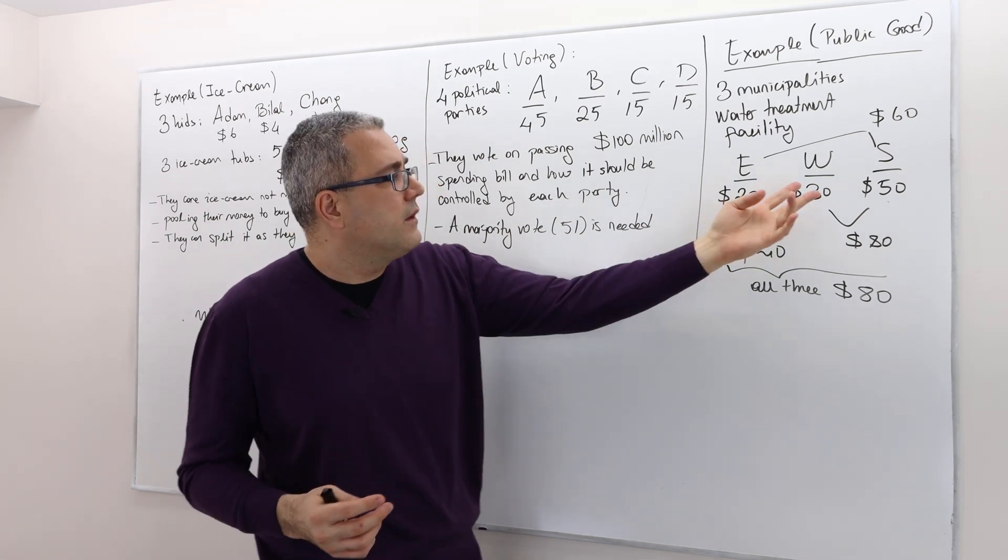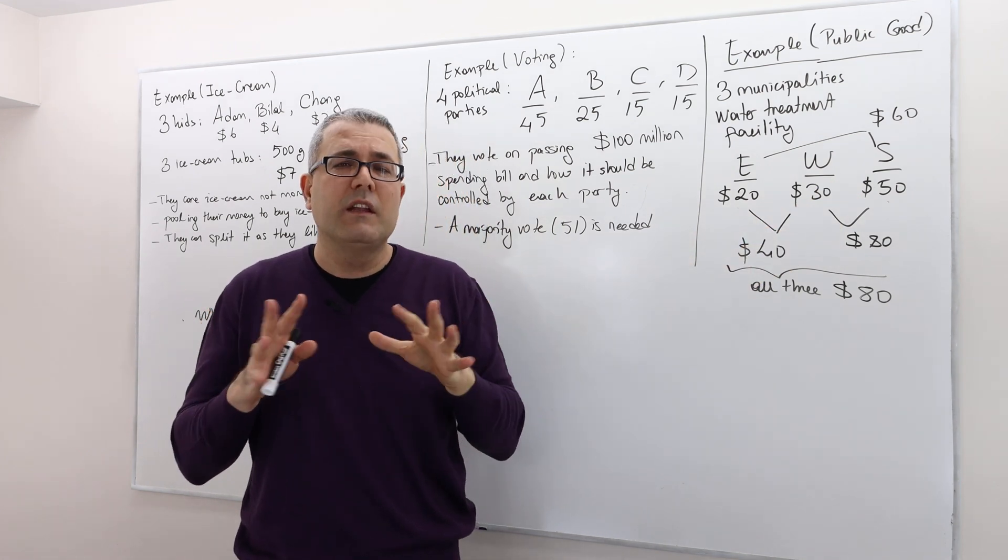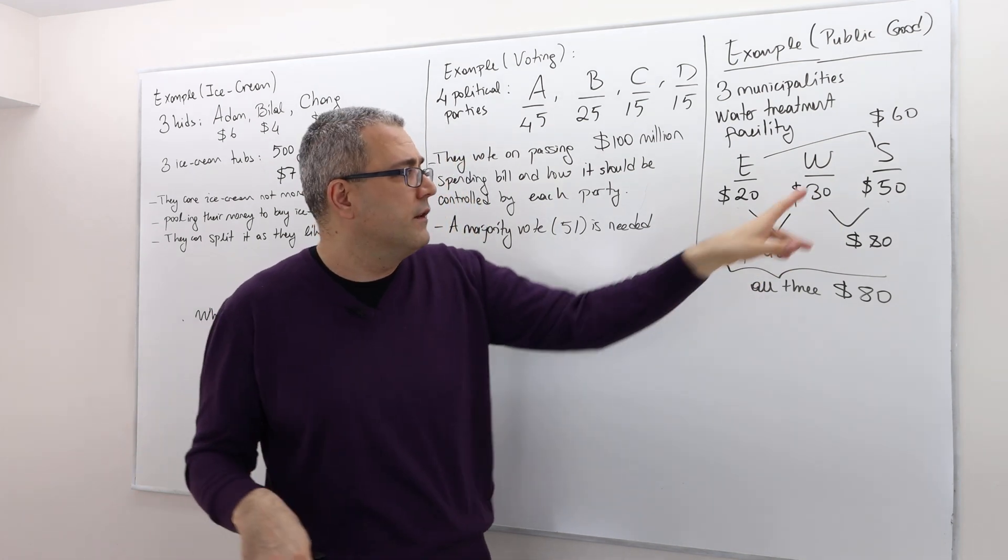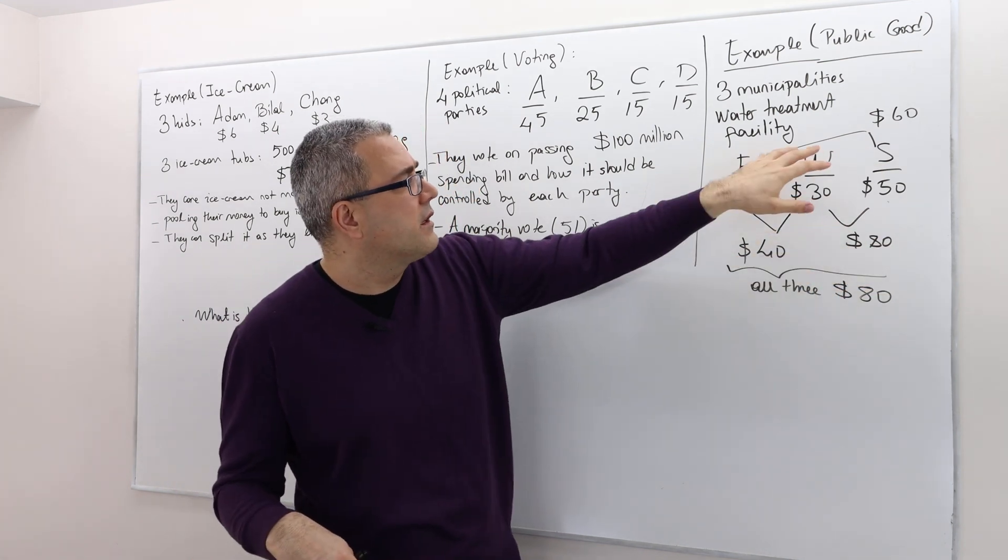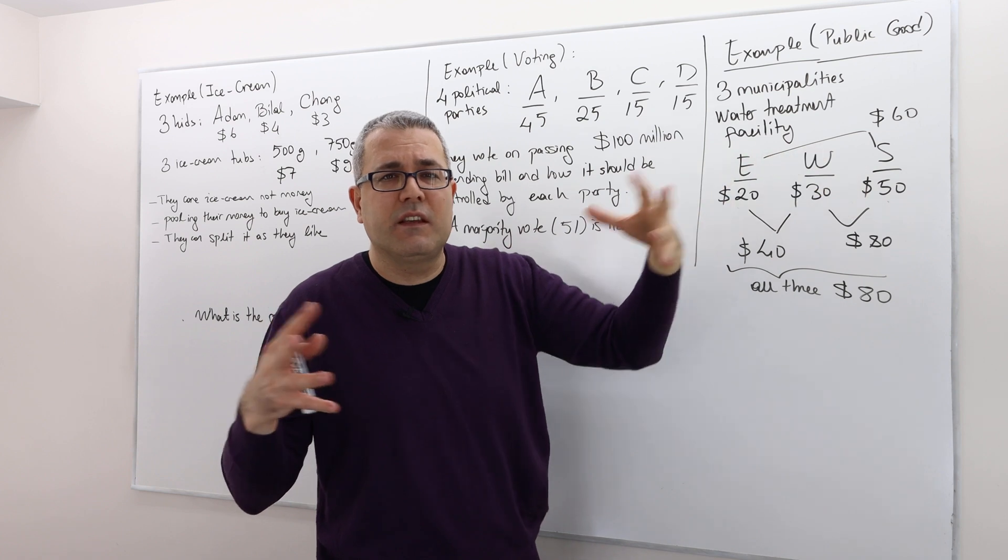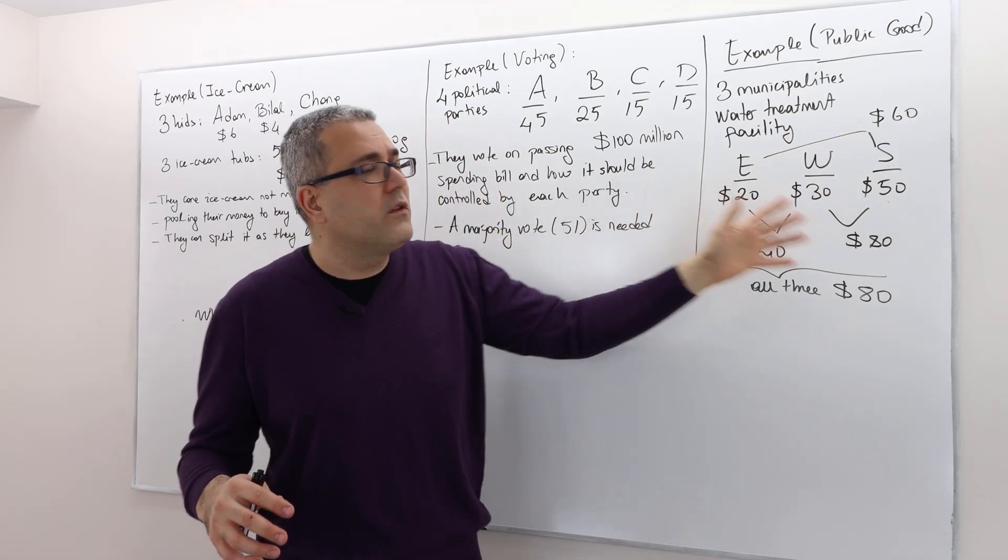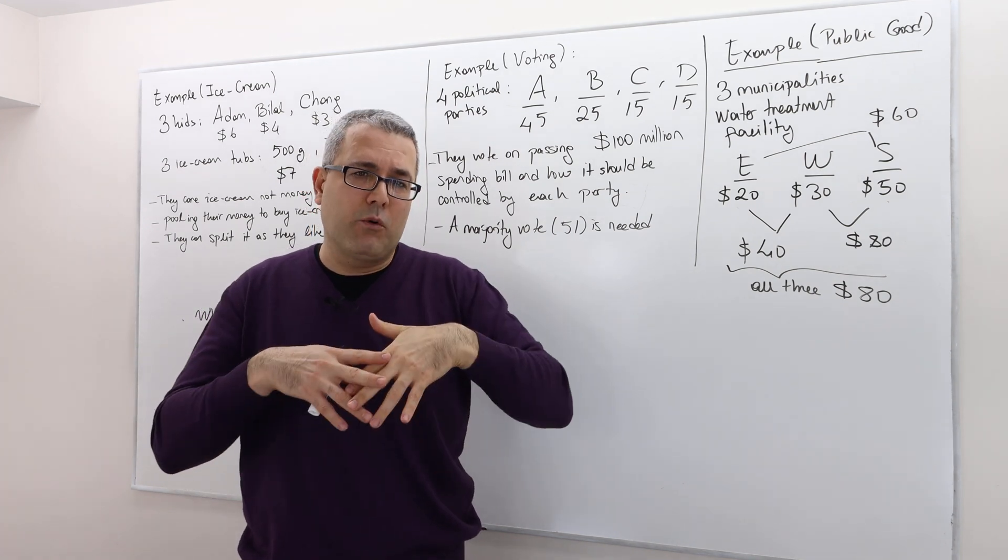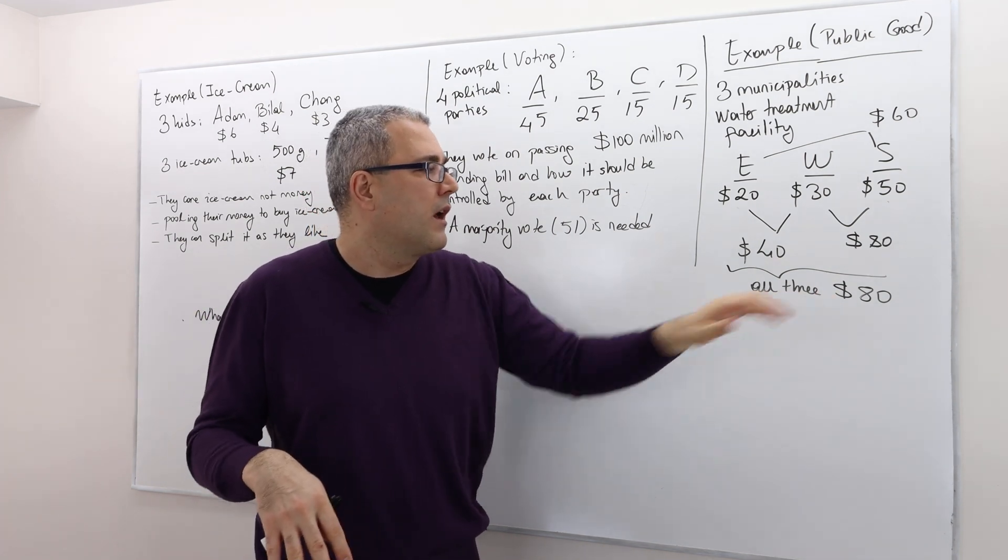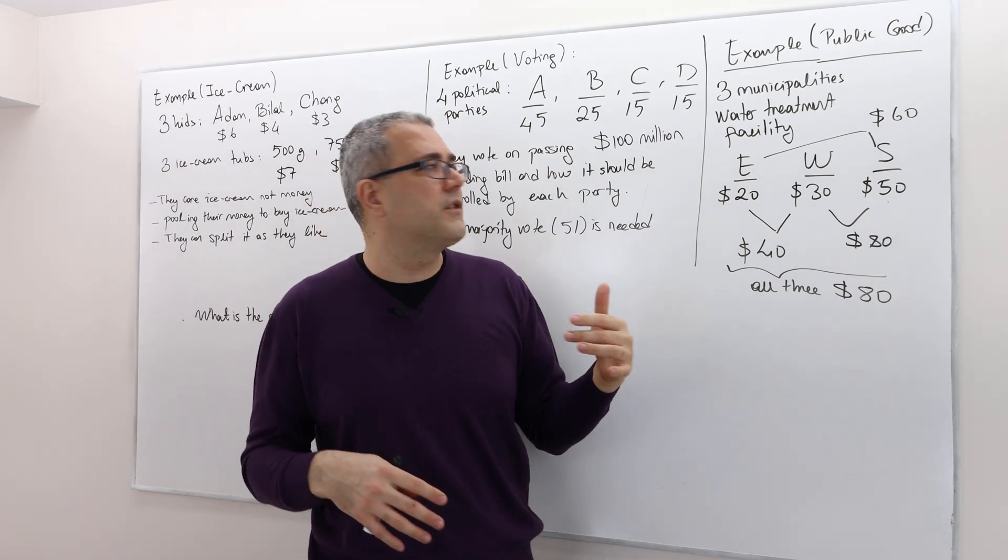And similarly, if W and S get together and build one facility that is going to serve both W and S, well then its cost is going to be 80 million dollars. And E and S, if they get together, the cost is going to be 60 million dollars. And if all three get together and build a facility that is going to serve all three of them, the cost is going to be 80 million dollars. Well, once again, the question is: